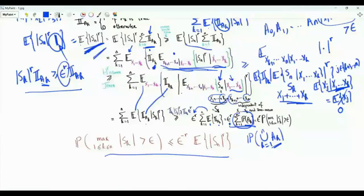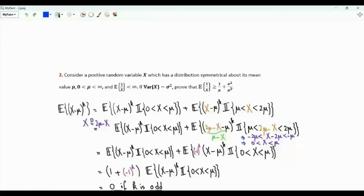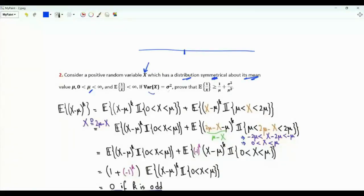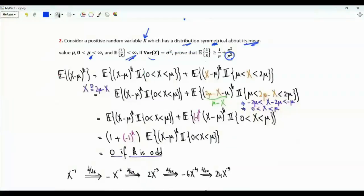We have a positive random variable X with mean mu. Its distribution is symmetrical about mu, and the variance of X is sigma squared. We want to prove that E[1/X], assumed to be finite, is lower bounded by 1/mu + sigma²/mu³ — that is, 1 over the first moment plus the variance divided by the mean cubed. We prove this using a Taylor polynomial.